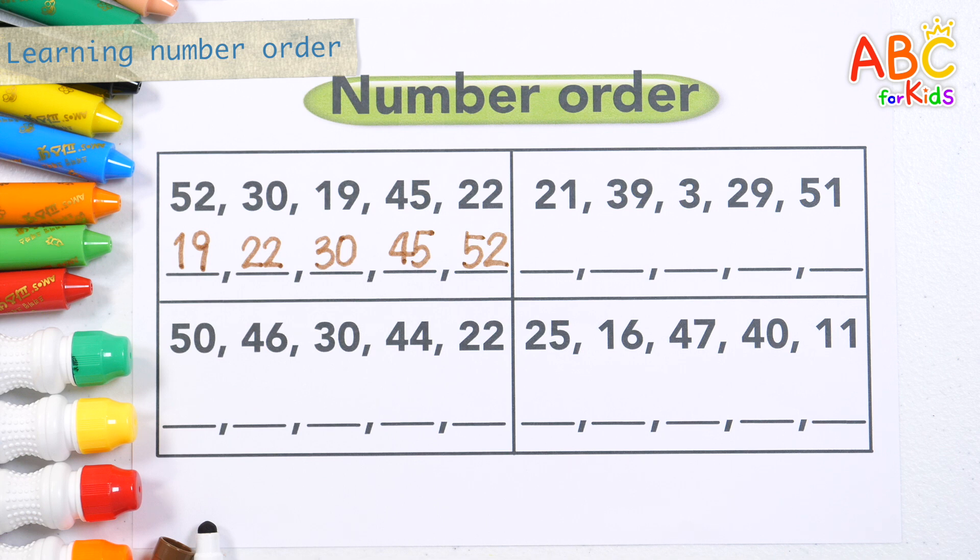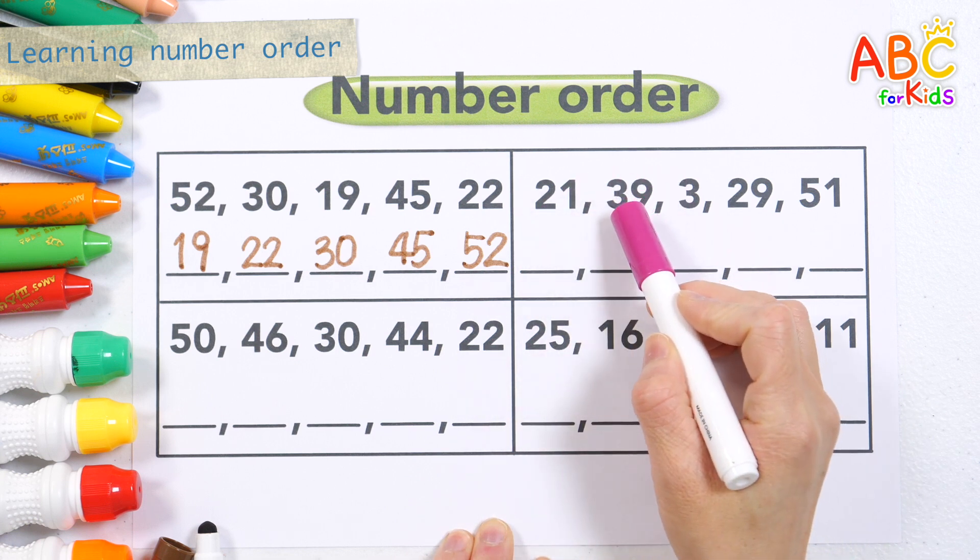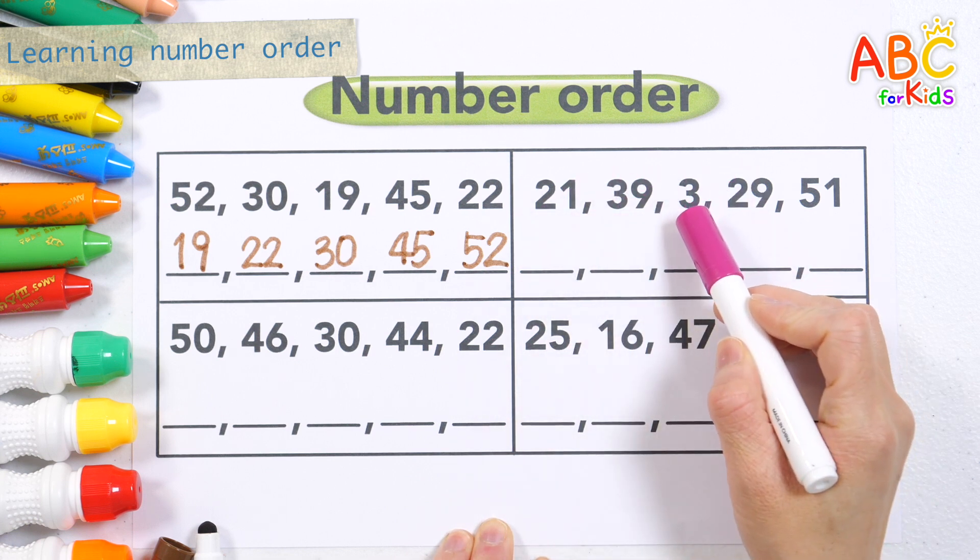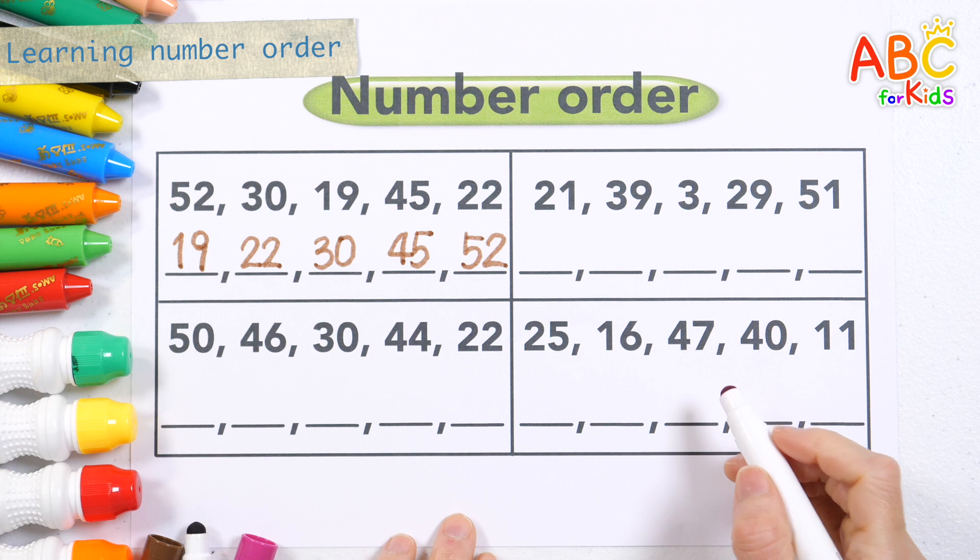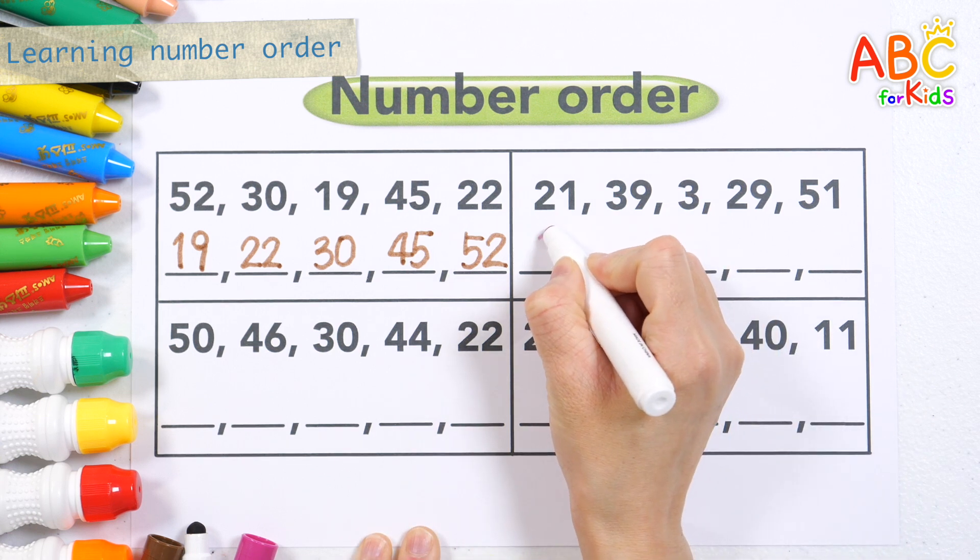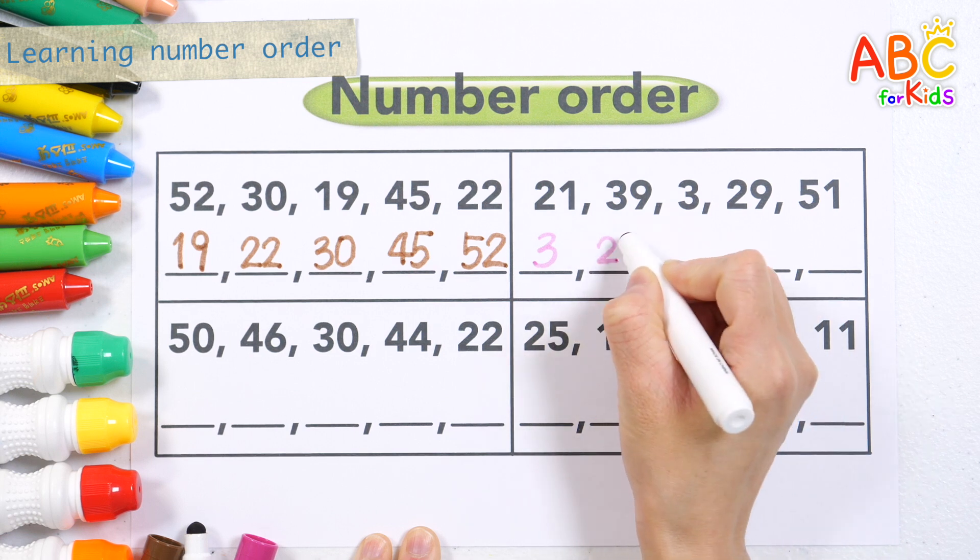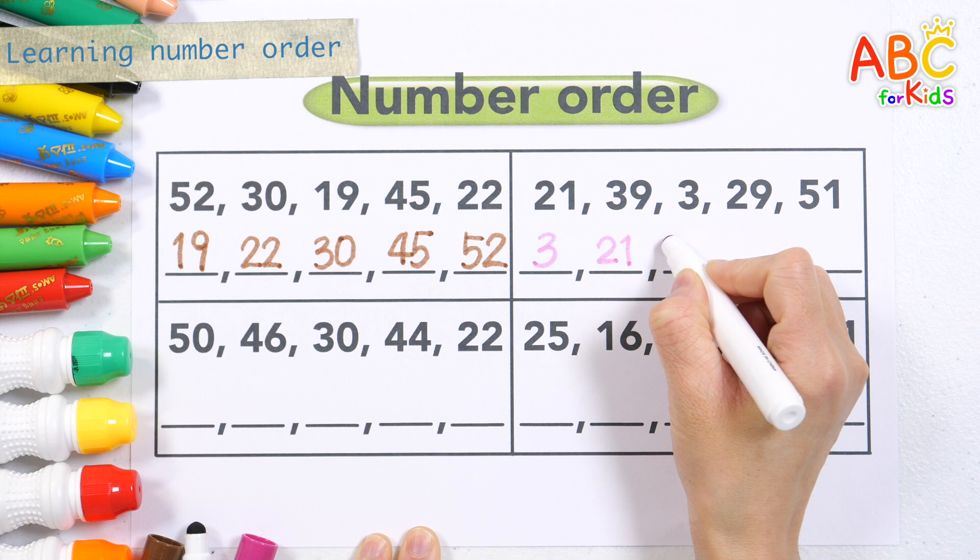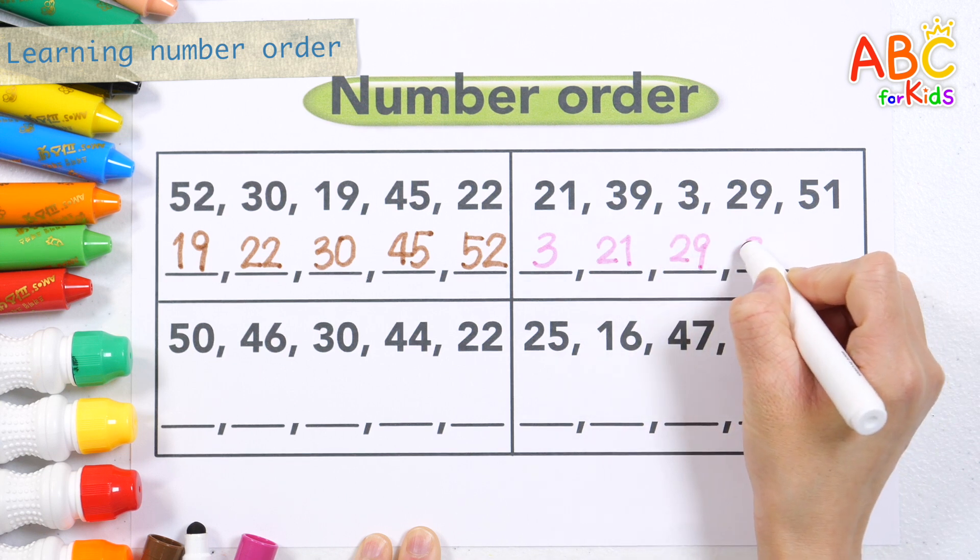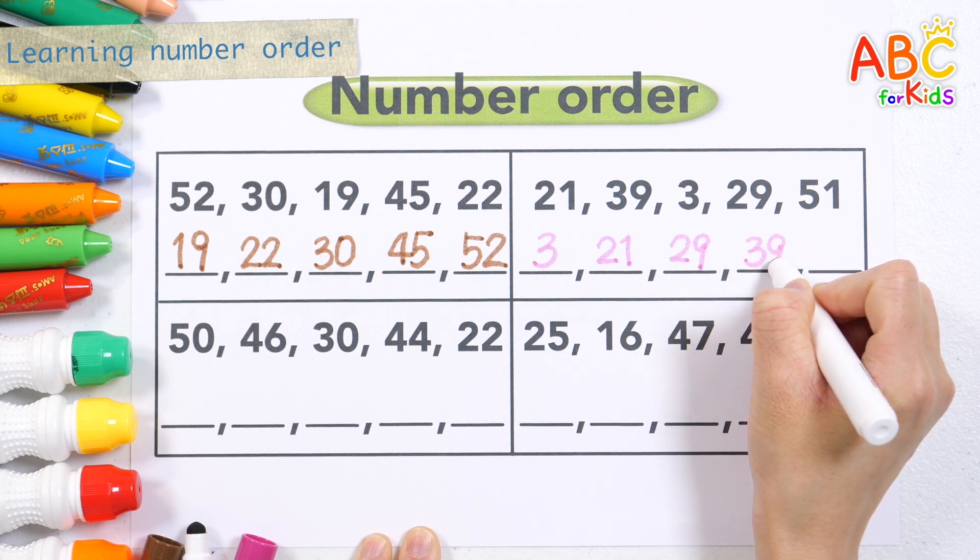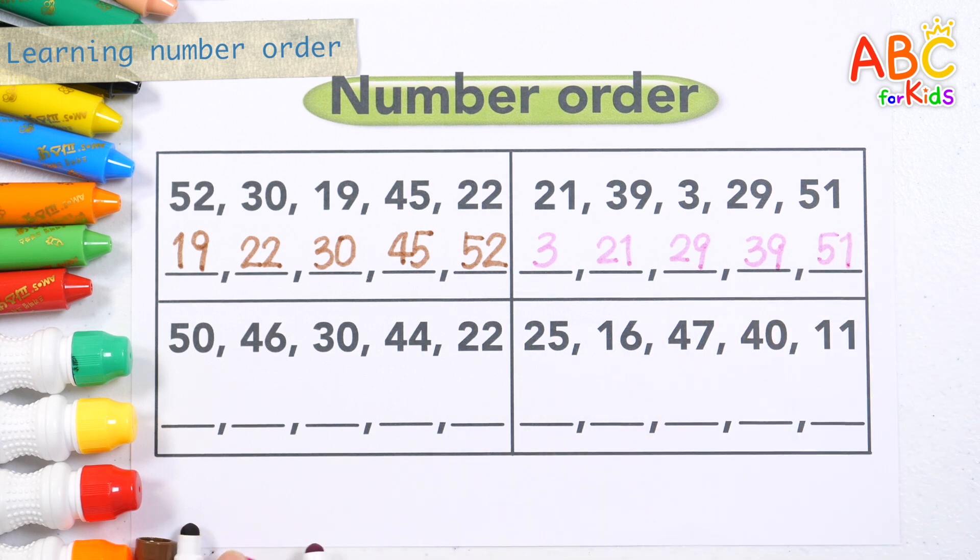Let's read the numbers by pointing with a purple pen and write them down in order. 21, 39, 3, 29, 51. Let's write the numbers in order from smallest to largest. 3, 21, 29, 39, 51. Good job!